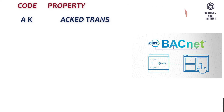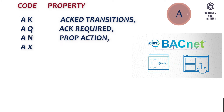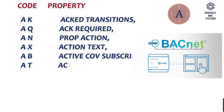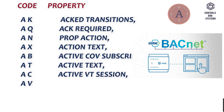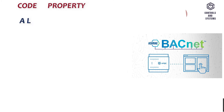BACnet Property Codes: AK - Act Transitions, AQ - ACK Required, A-N - Prop Action, A-X - Action Text, A-B - Active COV Subscriptions, A-T - Active Text, A-C - Active VT Sessions, A-V - Alarm Value, A-S - Alarm Values, A-L - All.